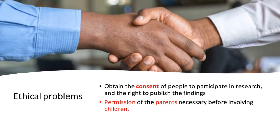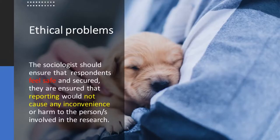The most important one is to obtain consent, often in writing, or the person's willingness to participate in our research, as well as the permission to publish the findings. In the case of researching children, we should obtain the consent of parents. It is evident that we should not gather information without the consent of those we are studying. The sociologist should ensure that the people participating in the research feel secure. They should be assured that reporting would not cause any inconvenience or harm to them when the research is published, and that their names or identity will not be revealed.